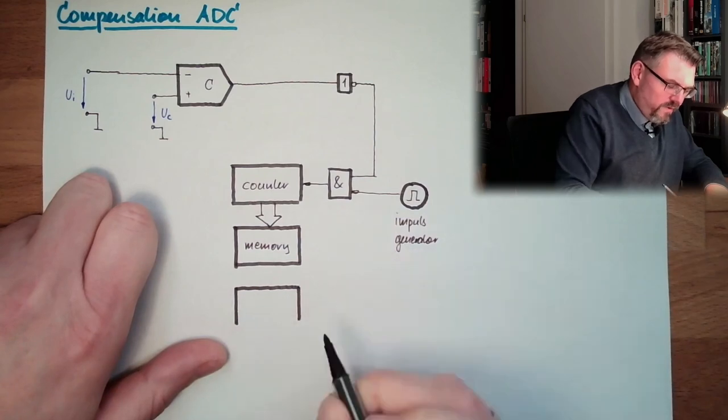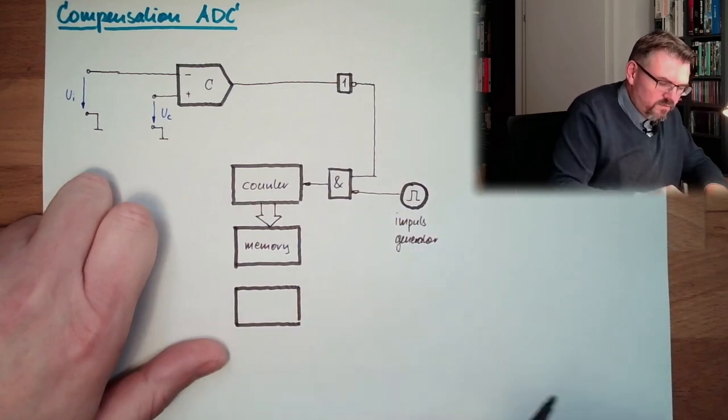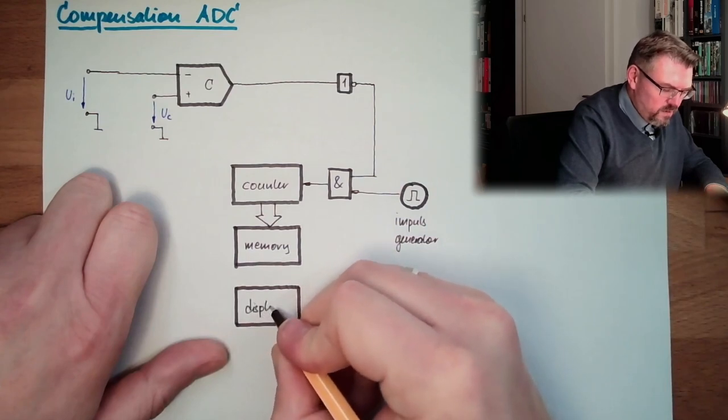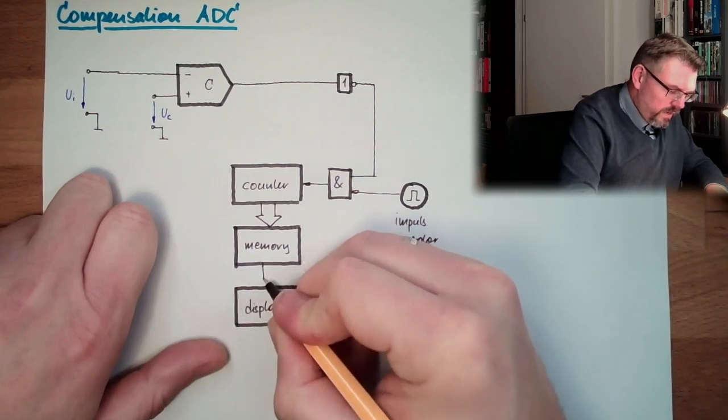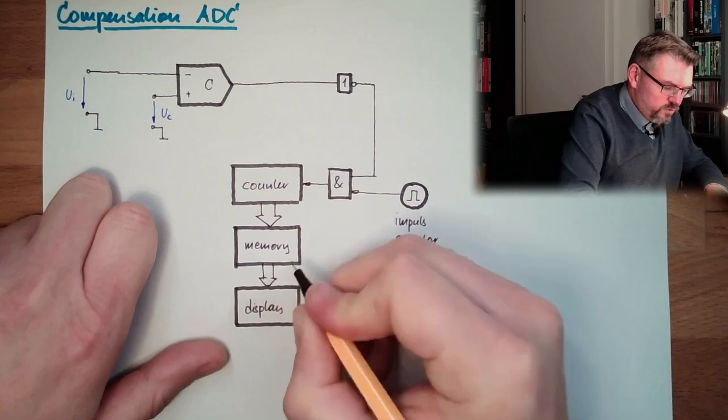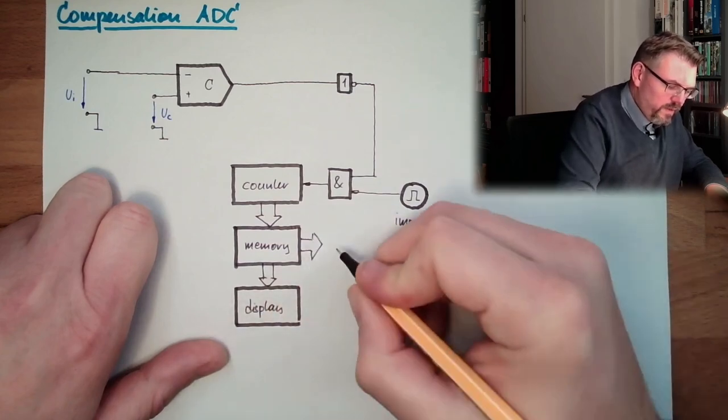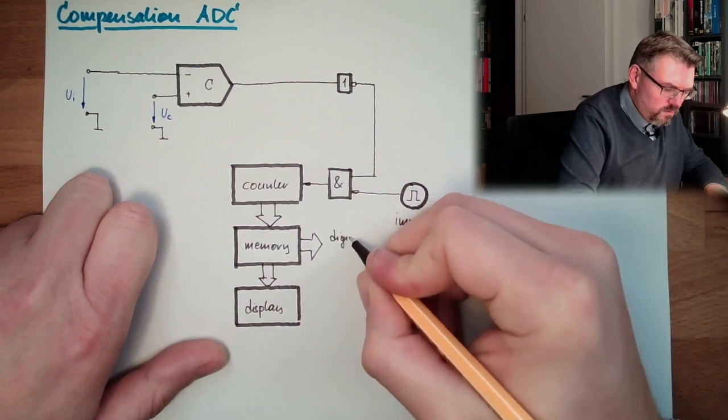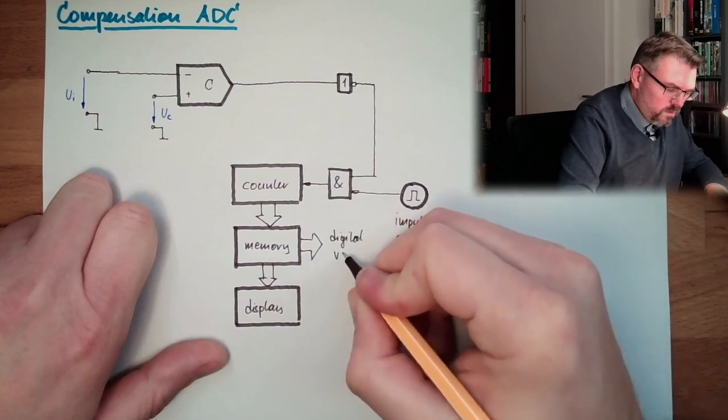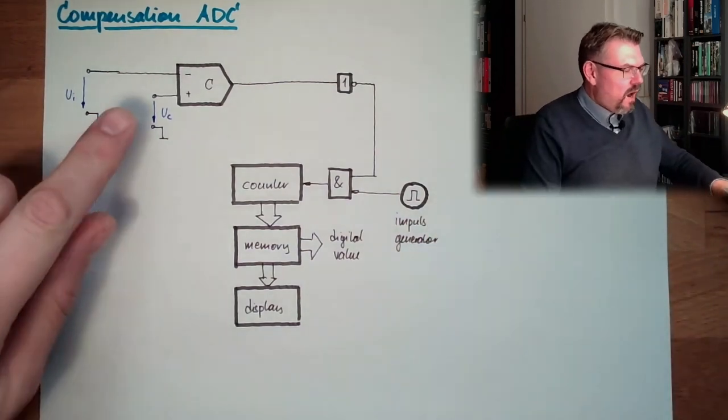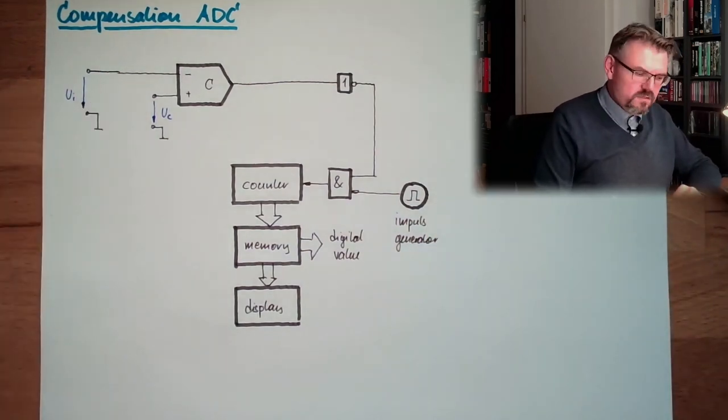And our counter value reflecting somehow the size of Ui. We have again, we might have again a display. And we might have, or we have for sure, our digital out, our digital value. So it's again a counter. However, how to produce this comparison voltage?